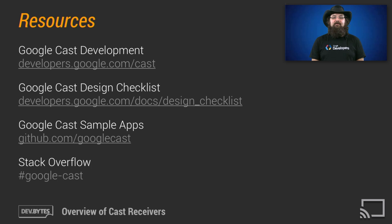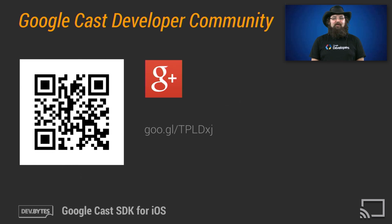We are very excited to see what you build with Google CAST. You can discover more details about the Google CAST SDK at developers.google.com/cast. The design checklist will go a long way in guiding you toward creating great second screen applications. You can find sample sender and receiver apps at github.com/googlecast. Post your questions on Stack Overflow and tag them with Google CAST. In future DevBytes, we will dive deeper into the CAST Sender SDK for each platform and the CAST Receiver SDK. Join the Google CAST developer community on Google+ for pro tips and share your experiences. Happy CASTing!